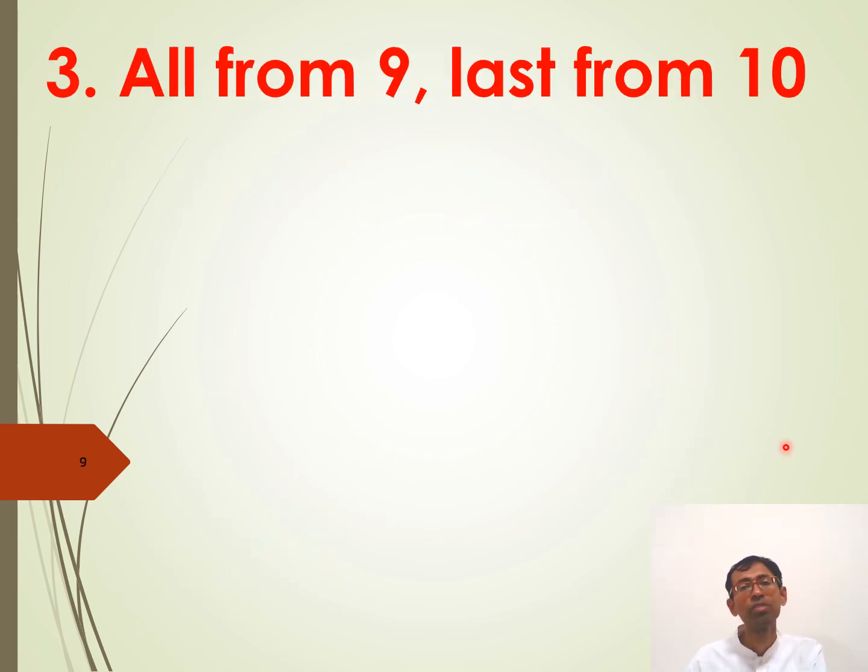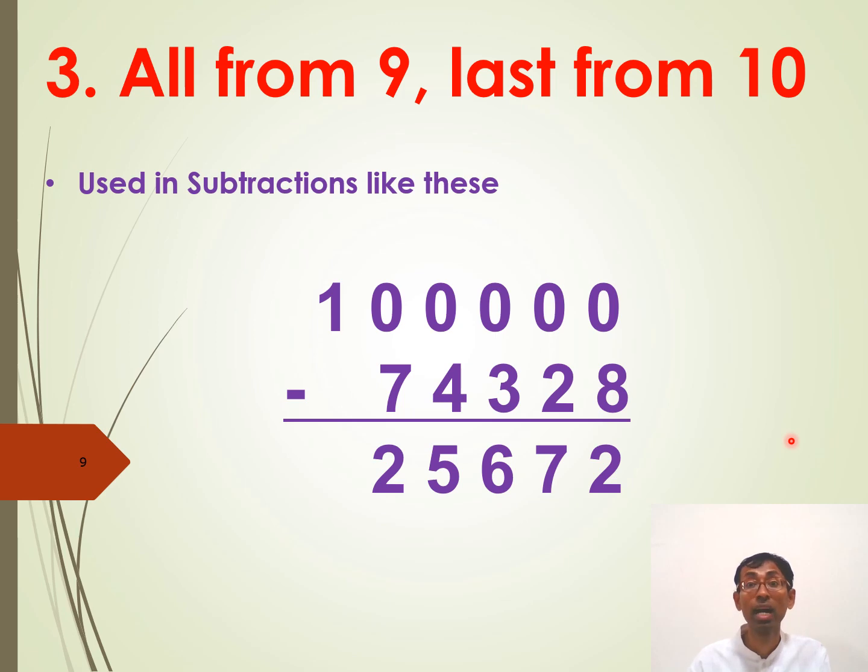All from nine, last from ten. This formula is used in subtractions like these. One hundred thousand minus seventy-four thousand, three hundred and twenty-eight. What you just need to do is simply subtract all these digits from nine and only the last digit. That is eight from ten. And you get the answer. As simple as that.